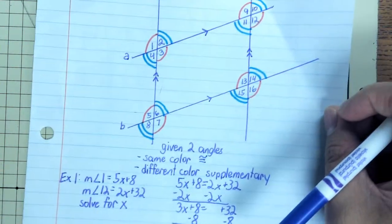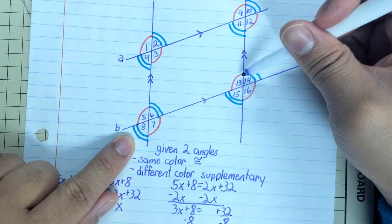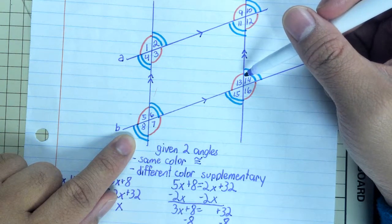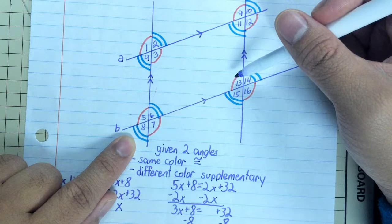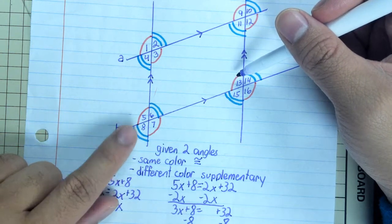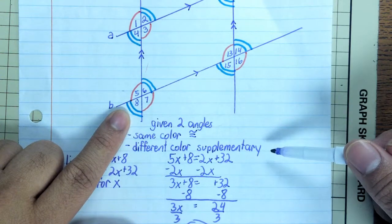So looking back at my diagram, 8 is over here and 13 is over here. Now notice 8 and 13 are not one of our seven special angle pairs. So if we just go by the seven, we don't know what 8 and 13 are. But looking at my colors, I see 8 is blue, 13 is red, oh they're different colors, they must be supplementary.